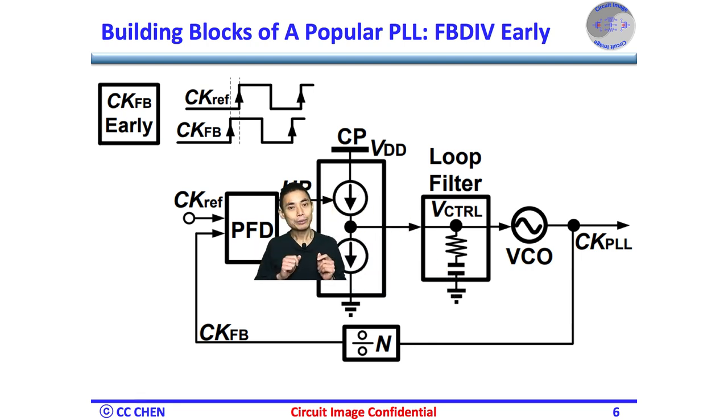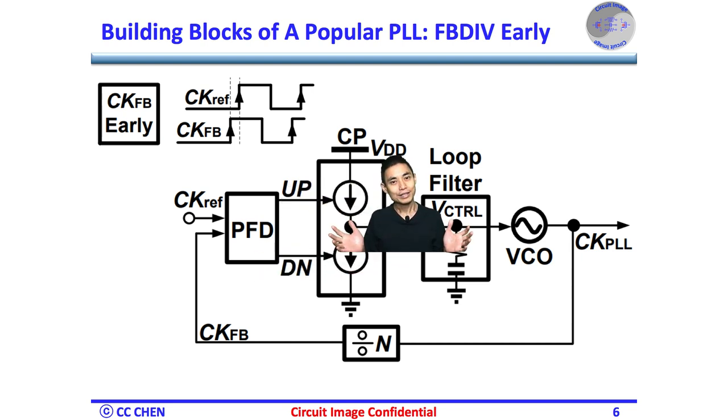In summary, you need the phase frequency detector to guide the charge pump by comparing the phase relationship between the reference and divider clock. Then, you need both the charge pump and passive loop filter to provide the proper control voltage to guide the VCO into the proper speed, such that the feedback divider's output edge time or phase will align with the reference one.